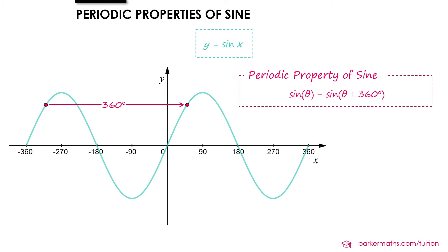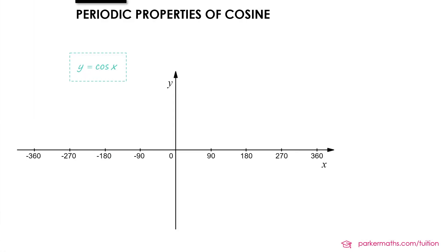Now let's take a look at the periodic properties of cosine. Once again we'll draw the graph between minus 360 and 360 and we'll take a point on the graph.